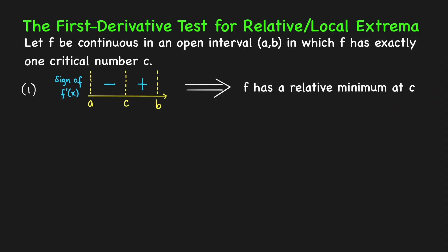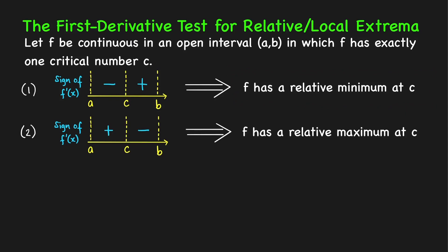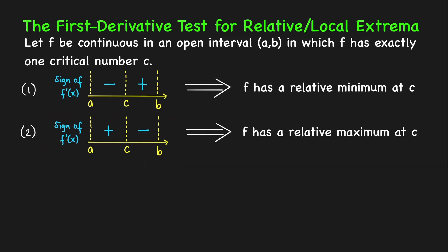Second case: suppose the sign chart shows the derivative is positive on the left of c and negative on the right of c. This means f is increasing on the left of c and decreasing on the right side of c. So our conclusion in this case is we have a relative maximum at c.